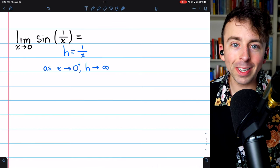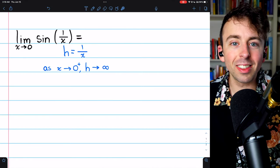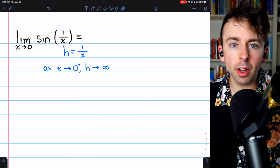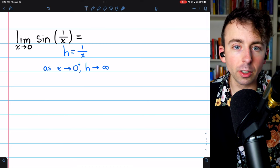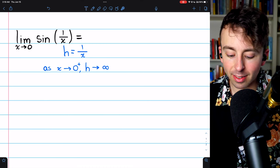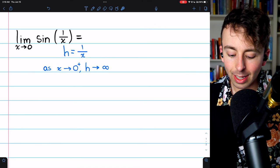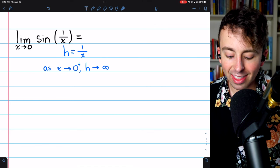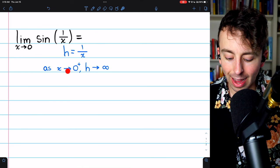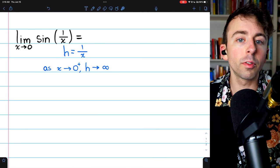Coming back to our notebook, it can often be easier to think about these limits of composite functions if you rewrite it in terms of a different variable. Instead of having 1 over x inside the sine, let's call that h. And think about what happens to h as x approaches 0, say, from the right.